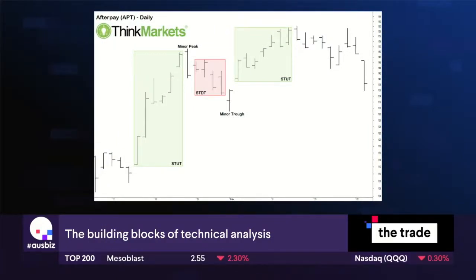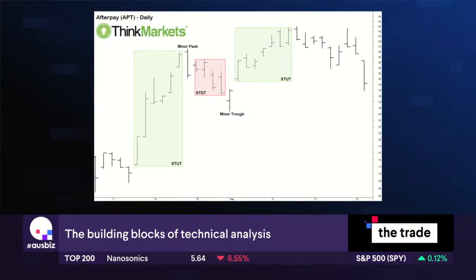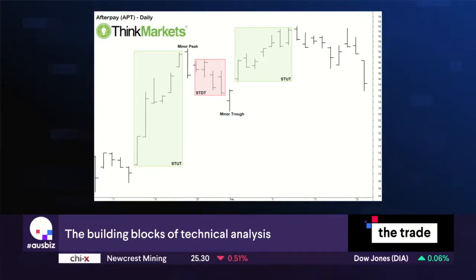Now flip it all on its head for support. We might have sold something right at the low — we've probably all done that. We regret selling at the low and say: if the price ever gets back down to that level, that's where I'm getting back in. It creates latent demand in the system, and that's where we find support in the market.